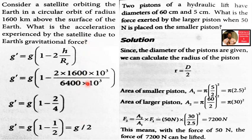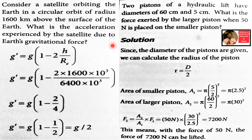G is 9.8 m/s². So g_das equals 9.8 divided by 2, which gives 4.9 m/s².